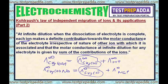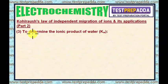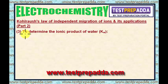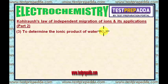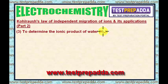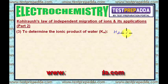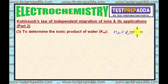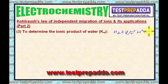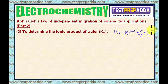Now I will take the application of Kohlrausch's law — this is the third application. Here, it is to determine the ionic product of water, that is the value of Kw. We all know water dissociates very slightly into H⁺ and OH⁻ ions, and H₂O gives 1 H⁺ and 1 OH⁻.